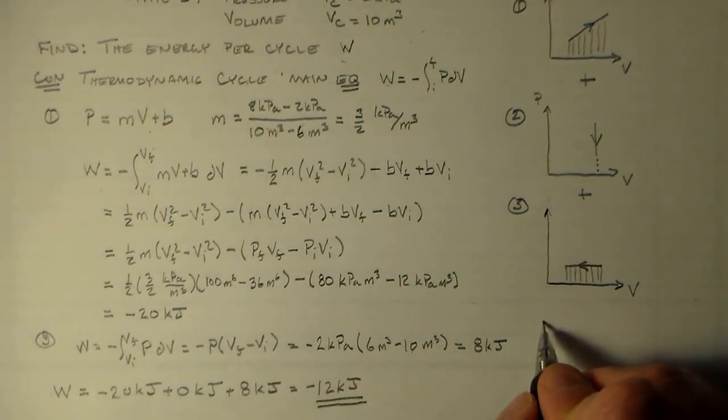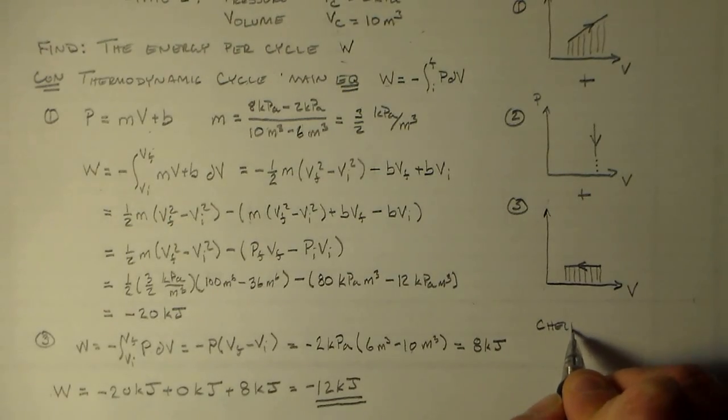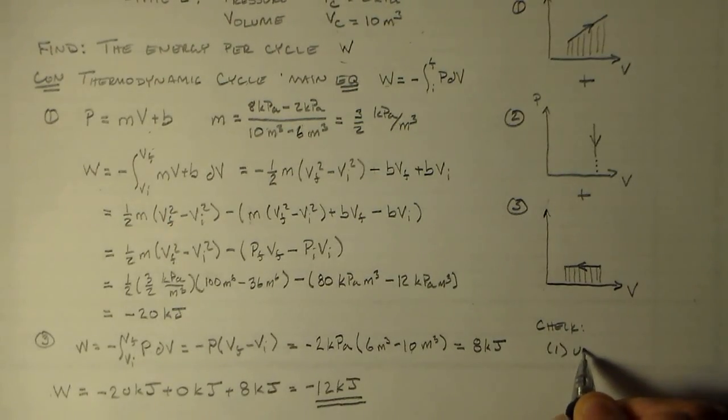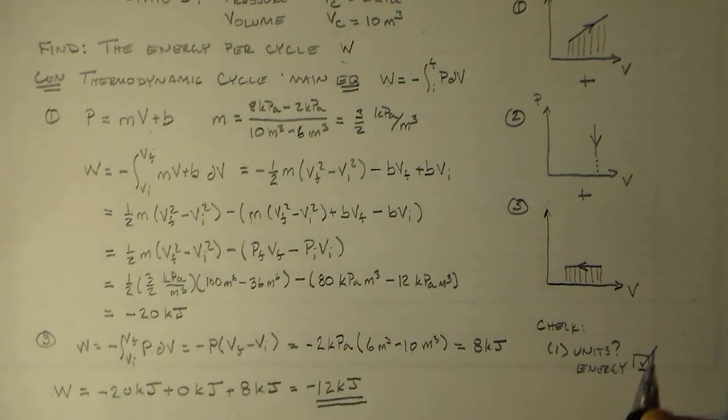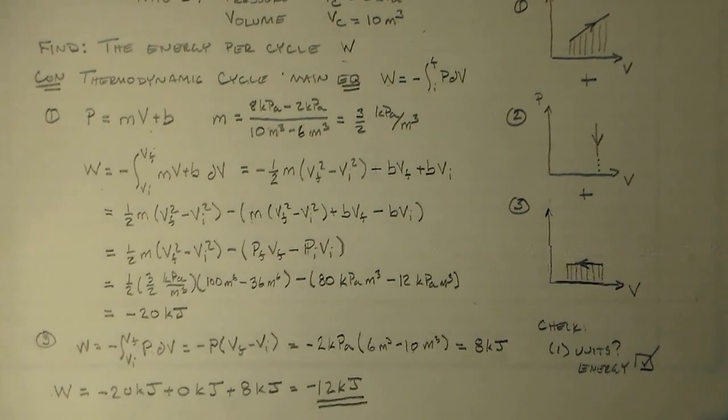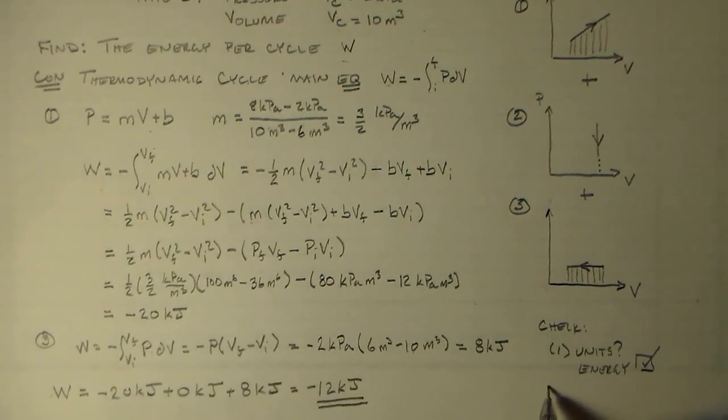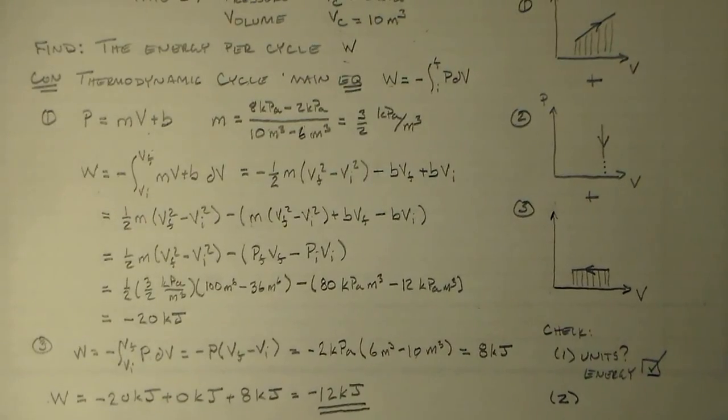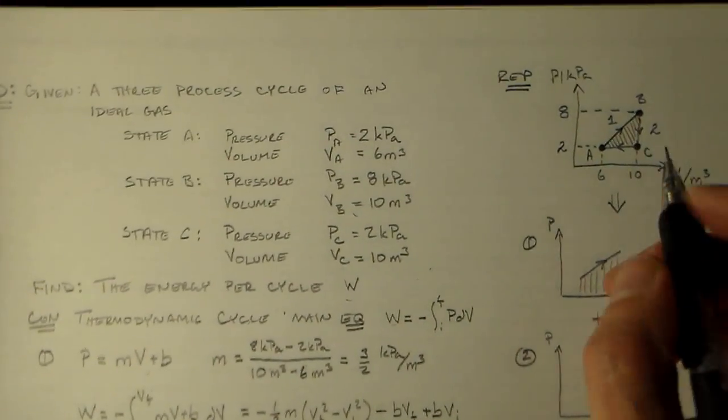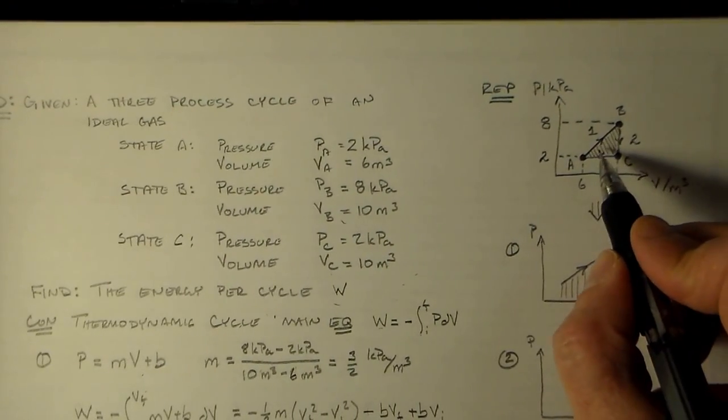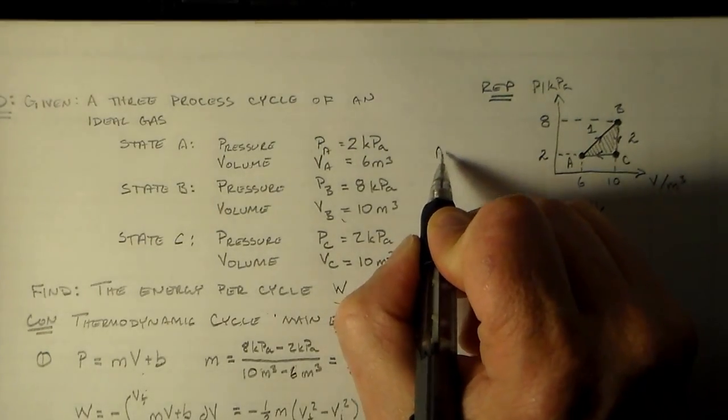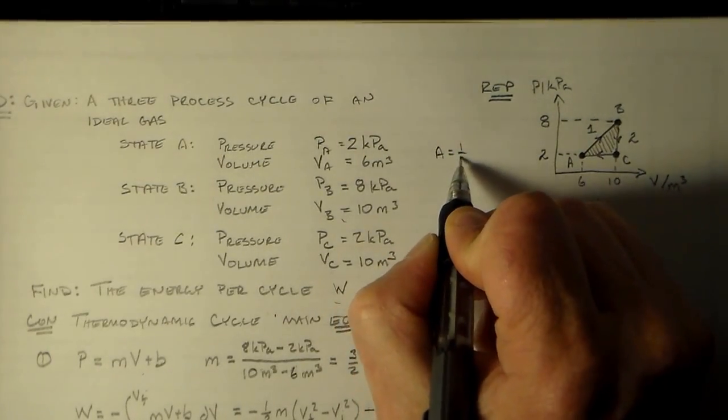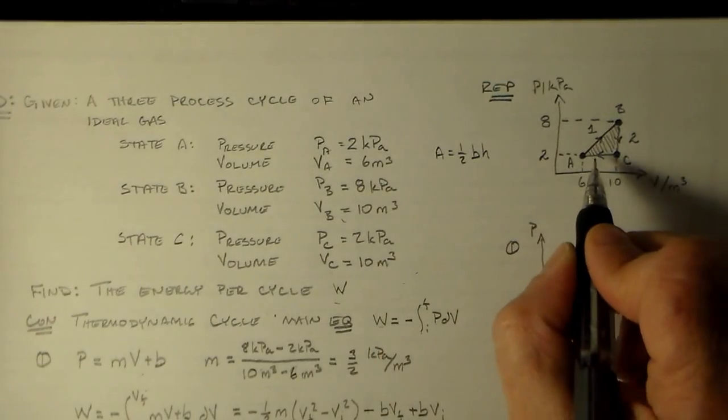So now we'd like to check things. Obviously our first check is units, and they're units for energy, which is what we want. But we do have a good second check. We can do it another way, the easy way. I've got a triangle here, and I know the formula of the area for a triangle.